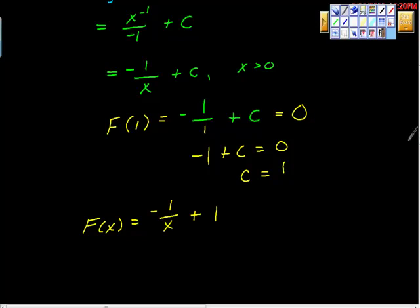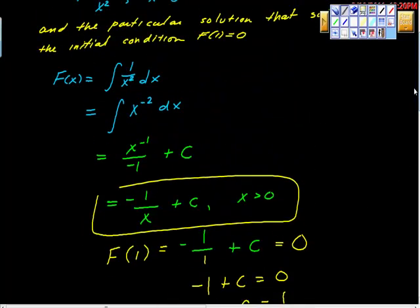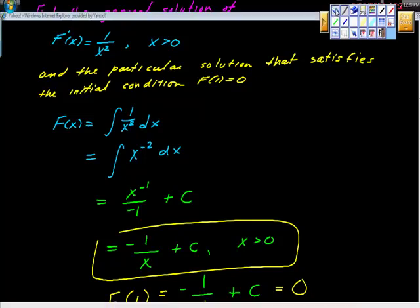We took our antiderivative and found the general function, then from there we took the x, y value they gave us — when x equals 1, y equals 0 — plugged that in, and got C = 1. This is a really good question because it makes us apply the antiderivative. Good work.